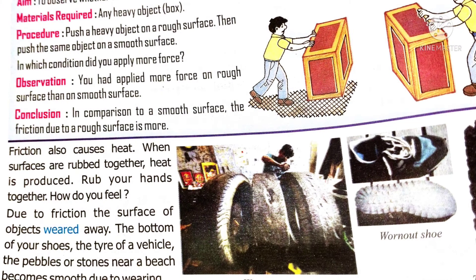In Activity 3, we require a heavy box. You are going to keep a heavy box on a rough surface and push it. Then take the same box and put it on a smooth surface and push it. On which surface did the box move easily without much effort? It is definitely on the smooth surface, because on the smooth surface there exists less friction than on the rough surface. So different surfaces have different magnitudes of friction. Friction is always greater on rough surfaces.